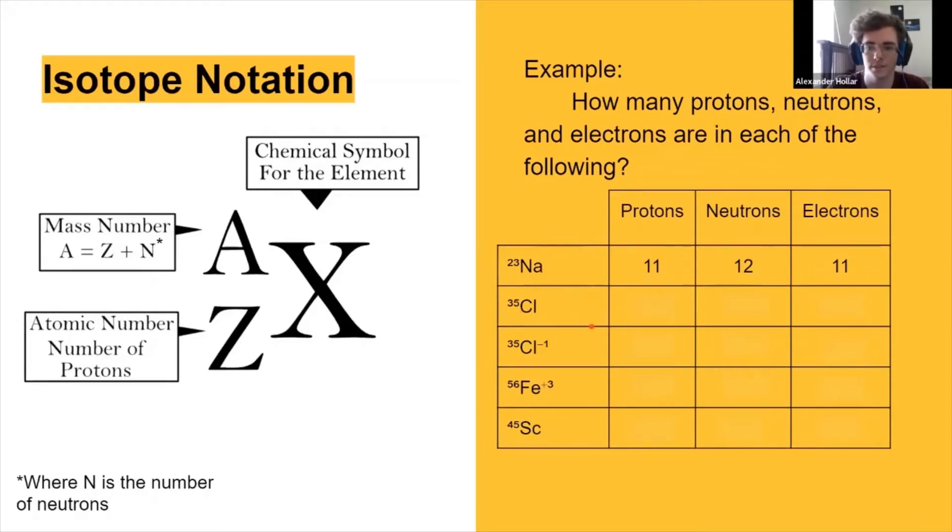And now using that, can you guys do these next four? Keep in mind that these charges will make it so that the number of protons and electrons are different. So watch out for this chlorine and then this iron plus three.